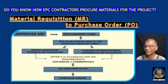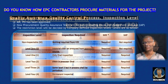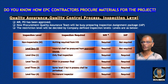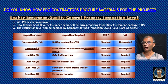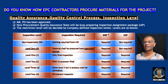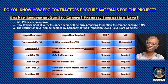It is very important to know the inspection levels and what type of inspection and restrictions apply at each level — starting from non-inspectable, Level 0, Level 1, 2, 3, and 4.